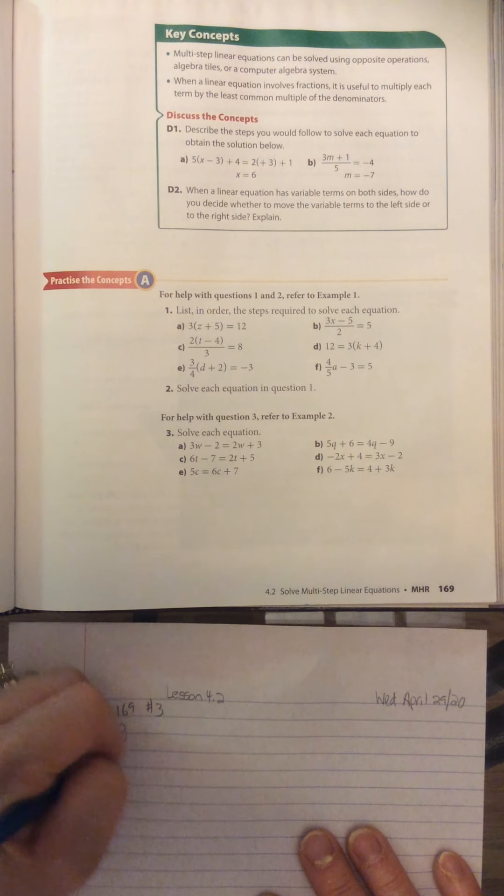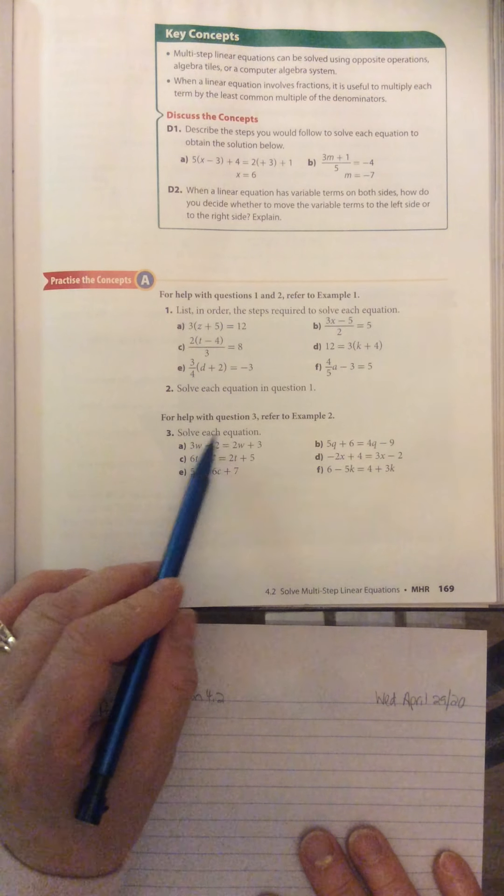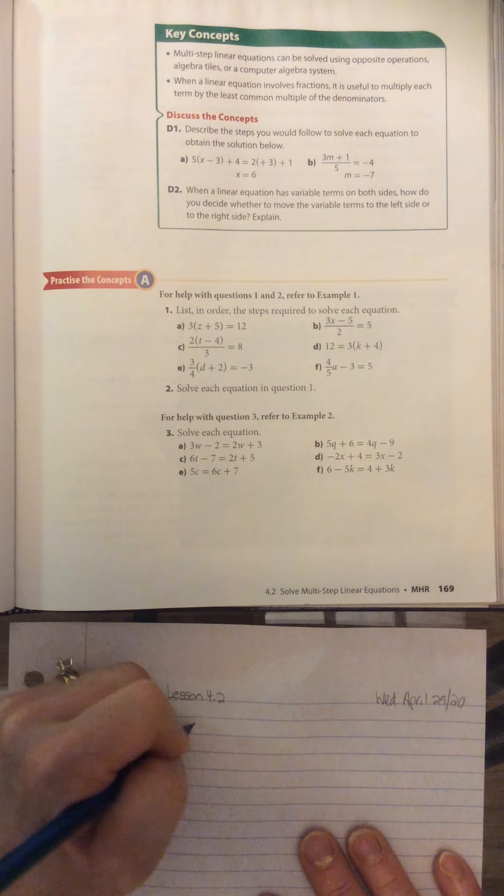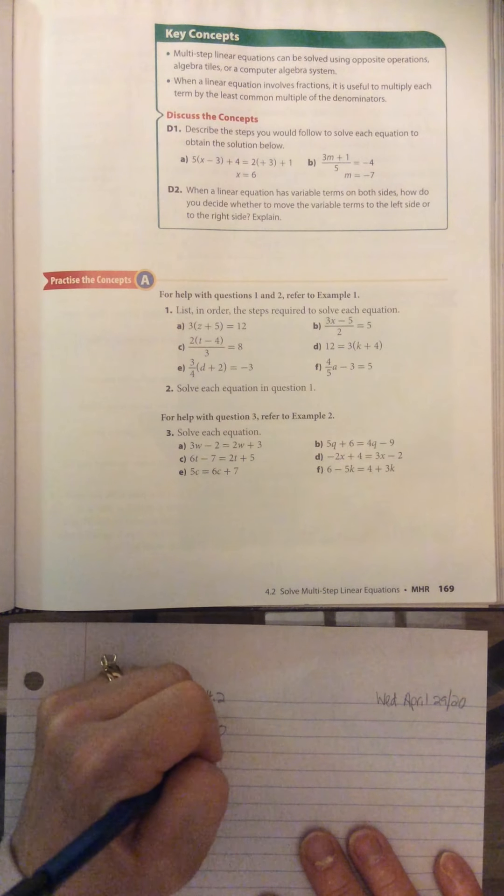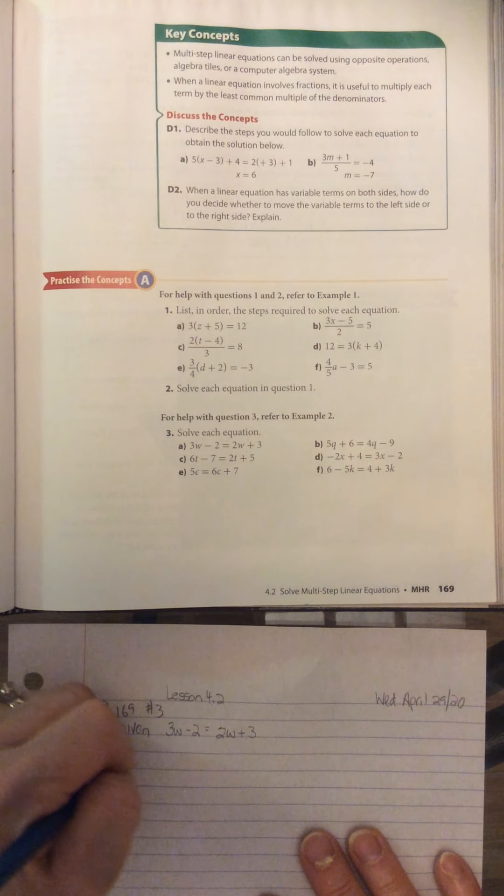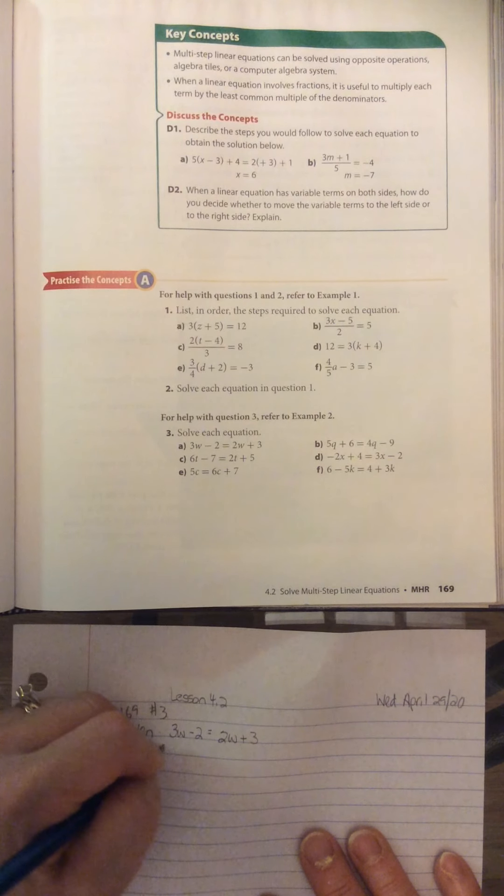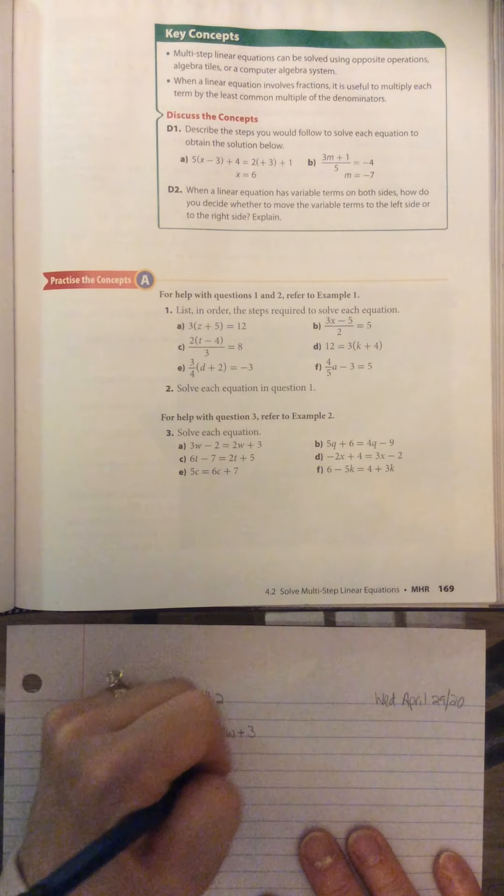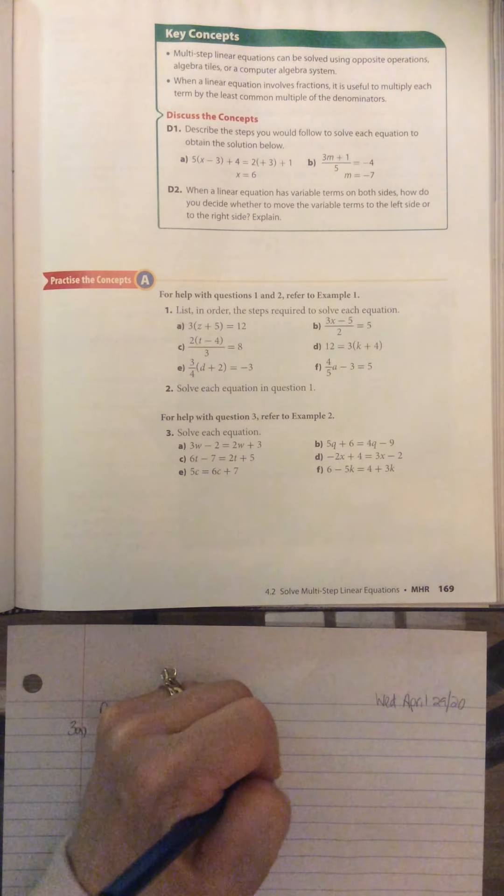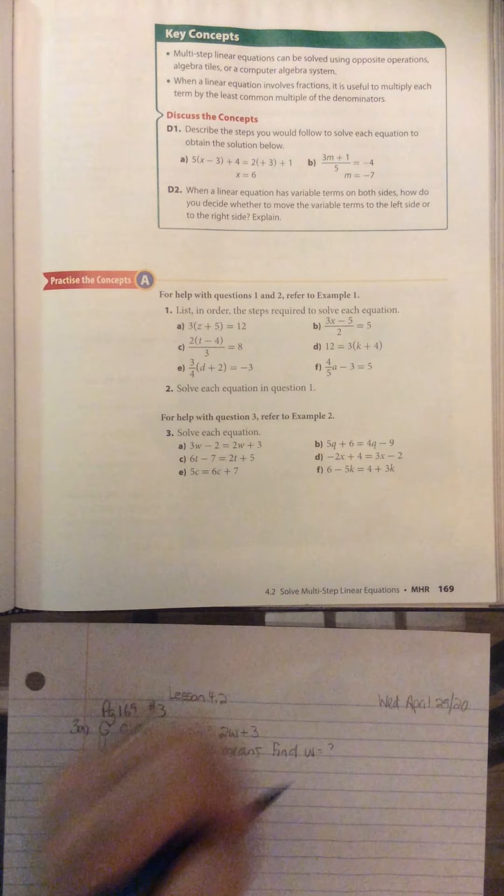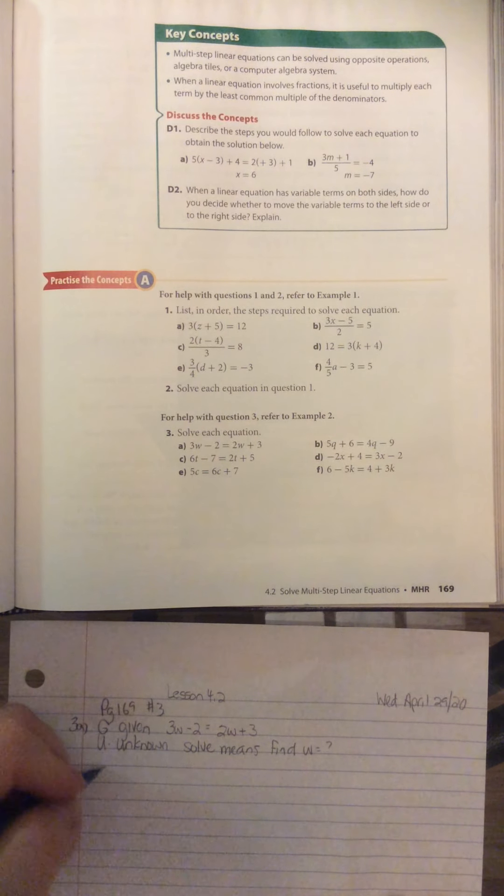It says solve each equation and they gave us this equation here. So 3W minus 2 equals 2W plus 3. Okay, U is the unknown. So we look for the verb. It says solve. So solve means find W. What does that equal? Okay. So GUE, equation.